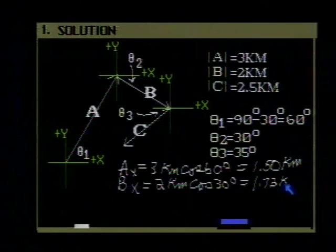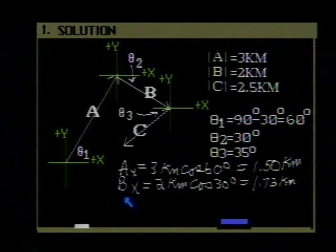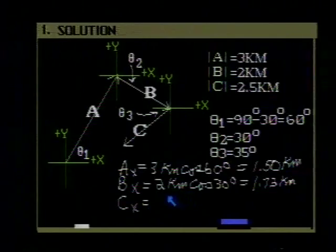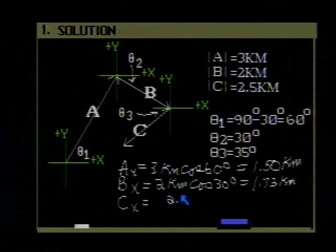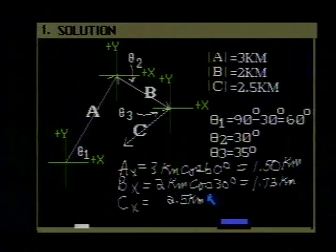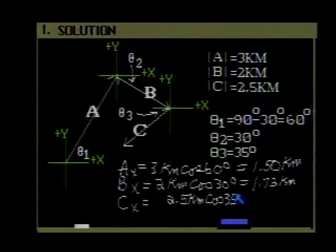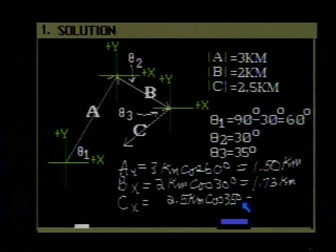And C sub x, magnitude of 2.5 kilometers, times the cosine of 35 degrees, gives us a value of 2.05 kilometers.